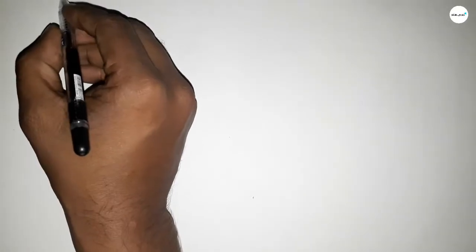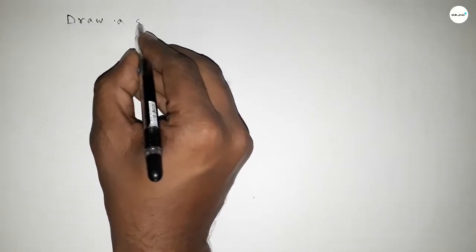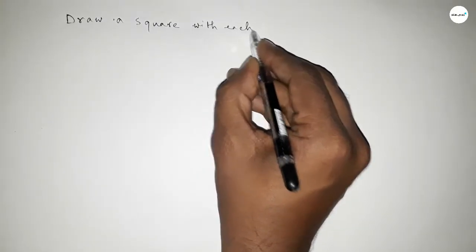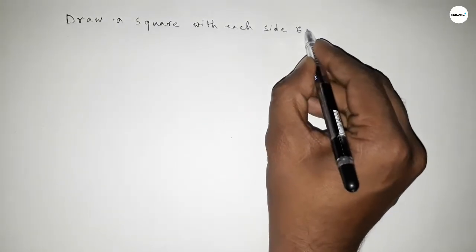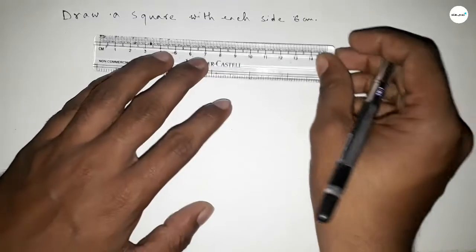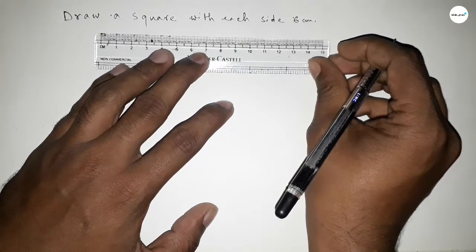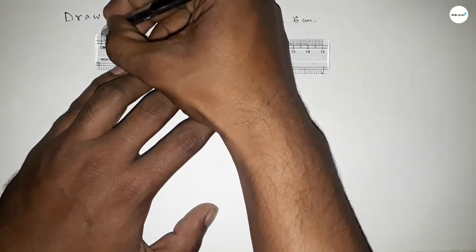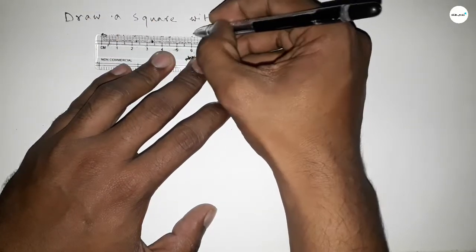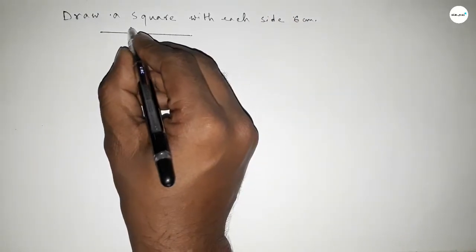Hi everyone, welcome to SSR Classes. Today in this video we have to draw a square with each side 6 centimeters. So let's start the video. First of all, drawing here the length 6 centimeters by using a scale — starting from 0, 1, 2, 3, 4, 5, 6. So first drawing here a length of 6 centimeters.